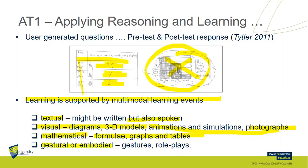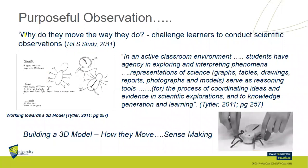And it can also be gestural or embodied — role plays, gestures, acting. What's it like to be a fish in a cyclone? Let's have a little drama activity. Purposeful observation — why do things move the way they do? Challenge your learners to conduct scientific observations. In an active classroom environment, students have agency in exploring and interpreting phenomena — they're not told it's right or wrong, they have agency, that means they do it. Representations of science — graphs, tables, drawings, reports, photographs, models — are just reasoning tools. Kids use these for the purpose of coordinating ideas and evidence in explorations and knowledge generation and learning.